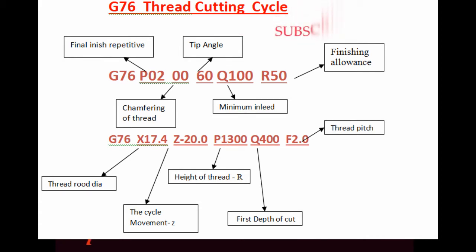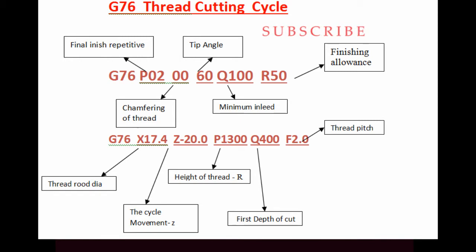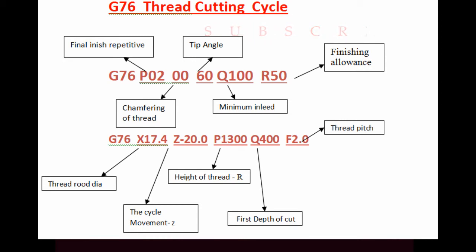G76 P value: P020060 — the '02' is the final finish cut. The X value is the root diameter, and the root diameter position is Z-20.